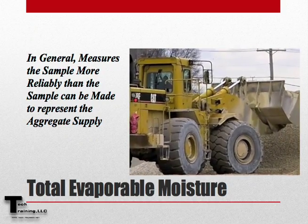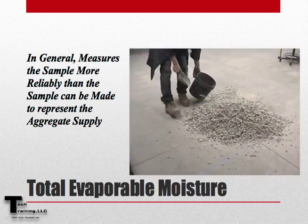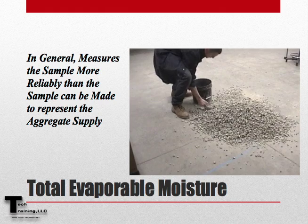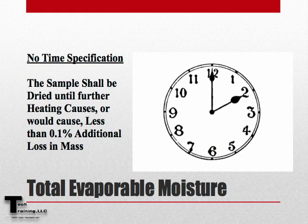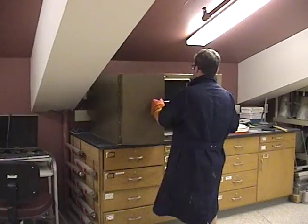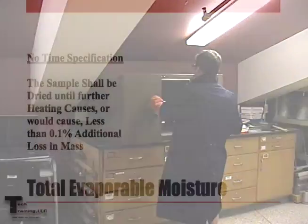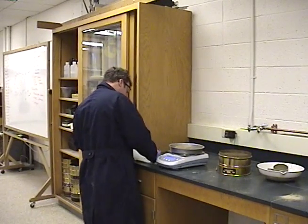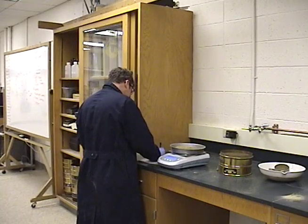In general, this method measures the sample more reliably than the sample can be made to represent the aggregate supply. There is no time specification for AASHTO T255. Instead, the sample is dried until further heating causes or would cause less than 0.1% additional loss in mass.